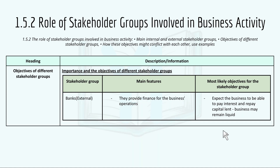Banks are an external stakeholder group. The main feature is that they provide finance for business operations by lending loans with an interest rate. Their most likely objective is that they expect the business to be able to pay interest and repay capital lent, and the business may remain liquid.